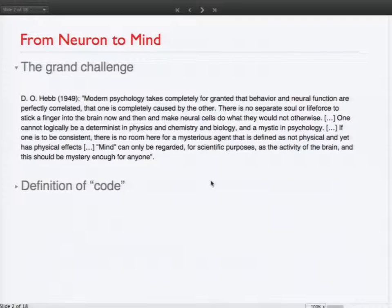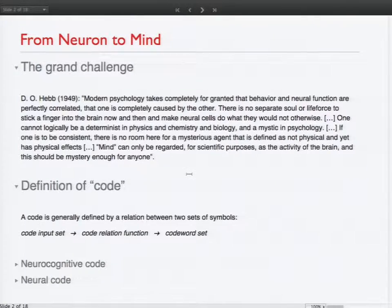So it's clear that both behavior, mind, cognition and neural activity in the brain is far from being random. So there must be some relationship between the two, which we could call a code. In principle, a code can be defined in general by relation between two sets of symbols, which is the code input set that's related through a code relation function to a codeword set. The input set is all the symbols that the code relation function accepts as an input, and the codeword set is all the symbols that the code relation function can generate.